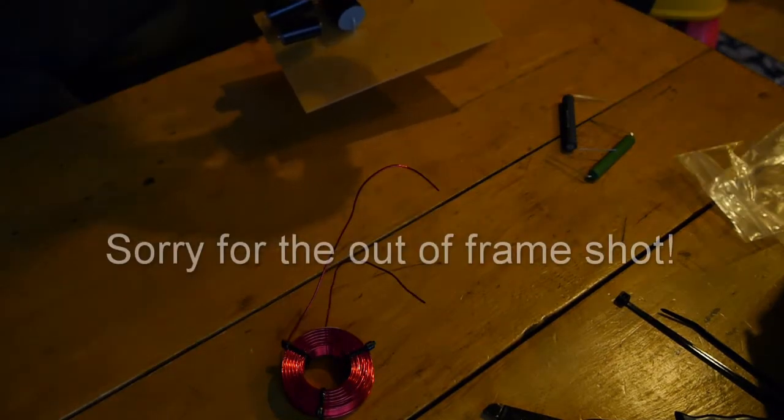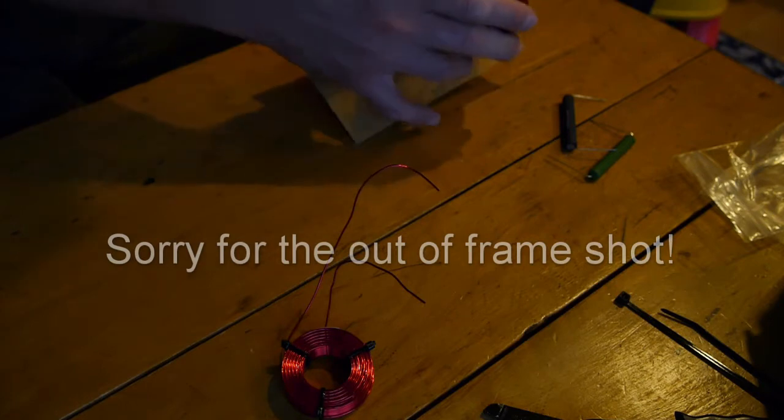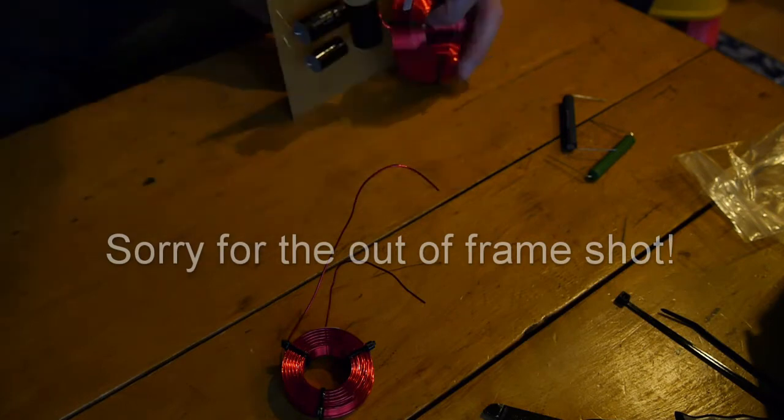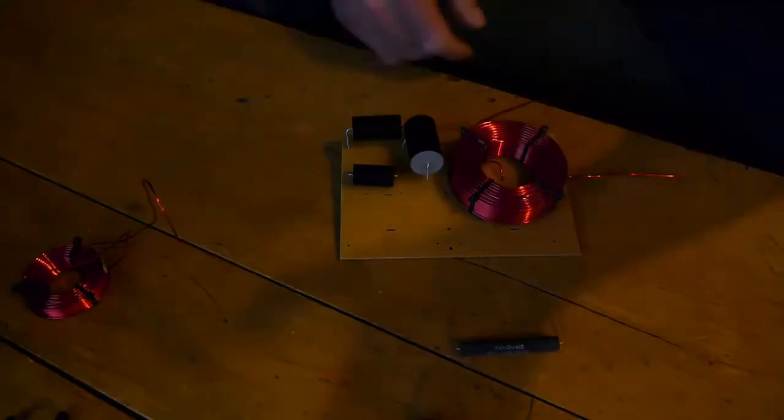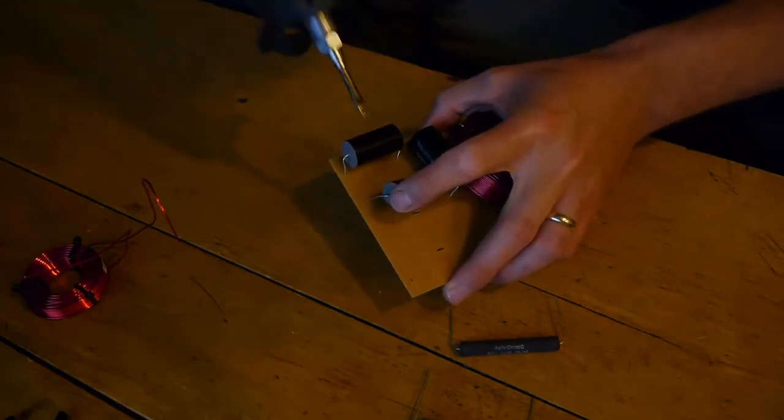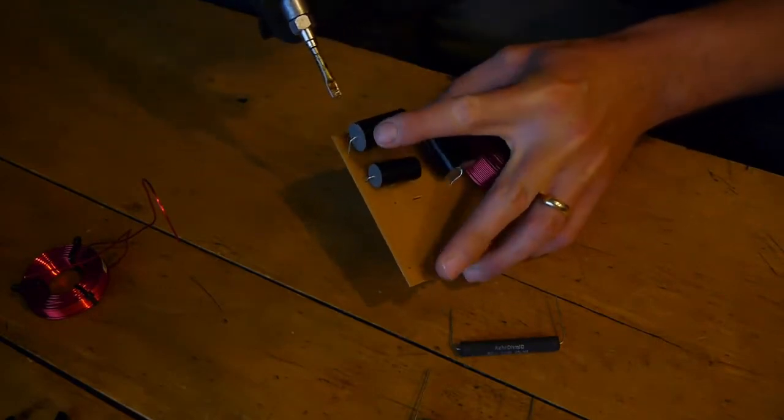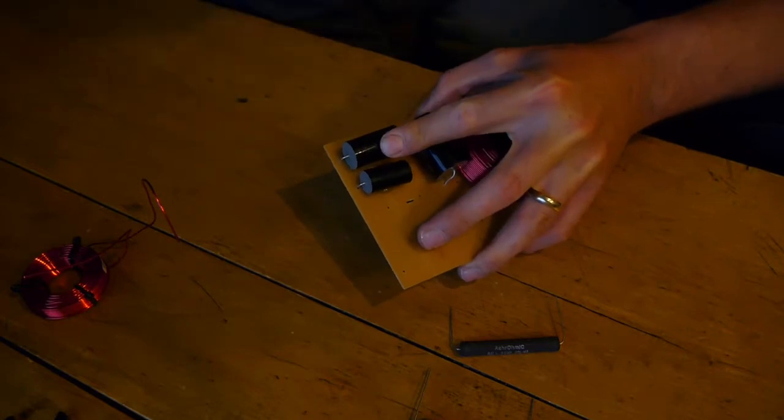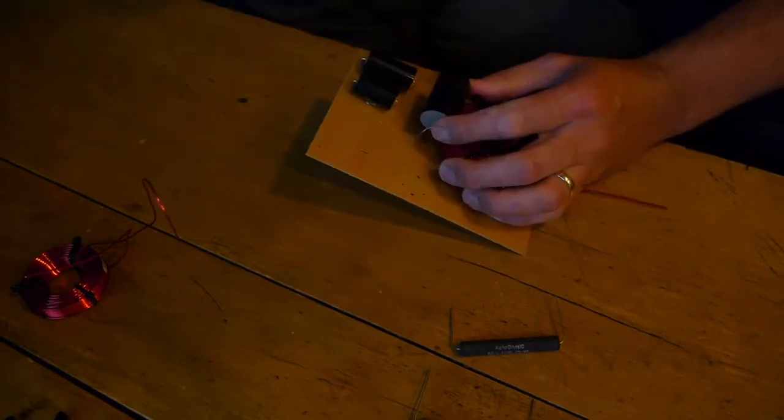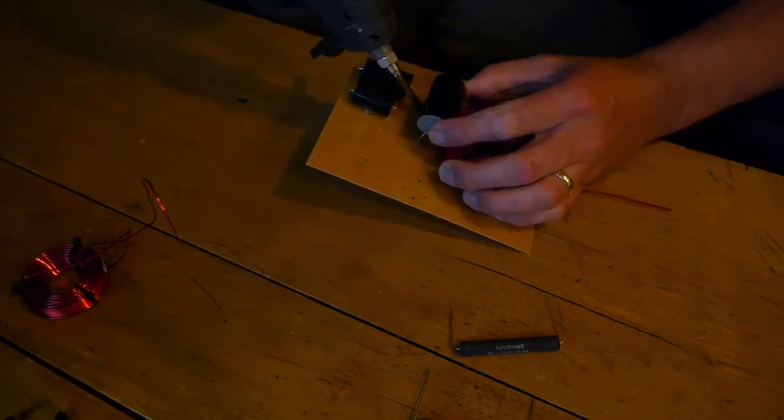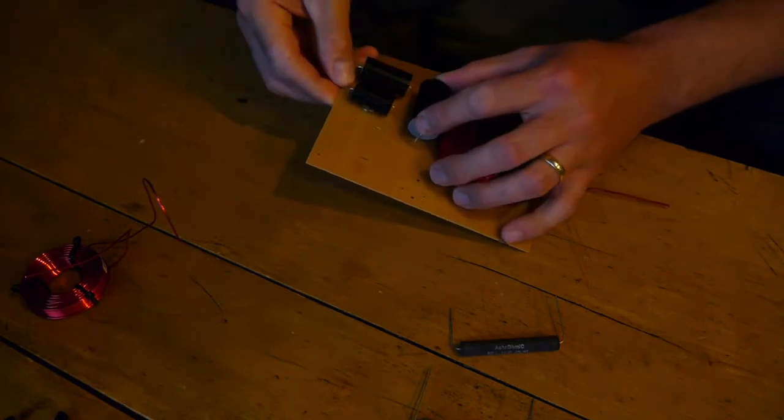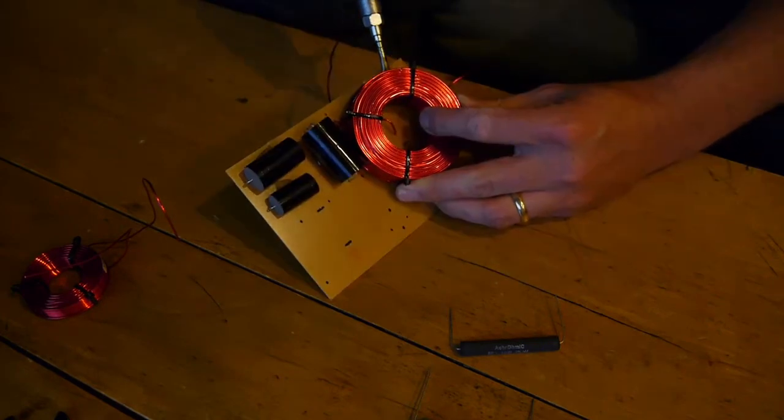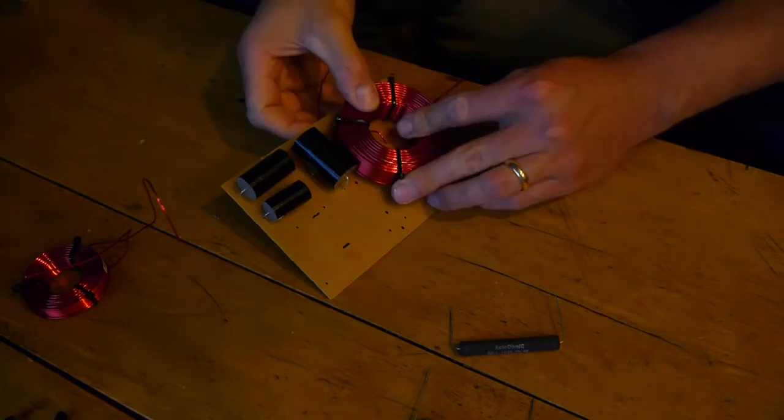I'm just stretching all the leads out so I can get them on the board there. And setting the inductor in place. Okay now I'm going to hot glue everything into place. Hot glue I just find it works really good. Some people like silicone or some other kind of glue. This just works really well for me. I glue the inductor into place.